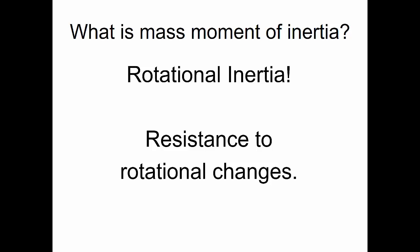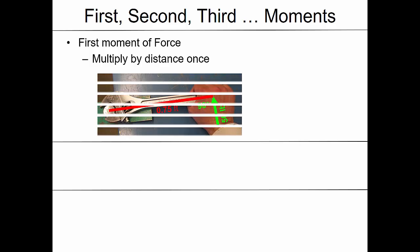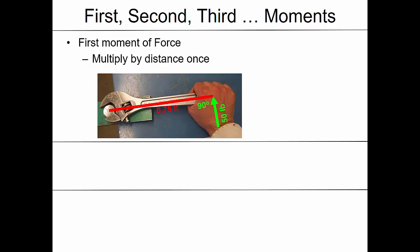To understand mass moments of inertia, we need to talk more about what a moment is — specifically, what a first, second, and third moment is. The first moment of a force we learned about in statics. A moment is found by multiplying the force by a distance once. So if I've got a wrench and I'm pushing on it at 90 degrees with 50 pounds, with a moment arm of 0.75 feet, then the first moment equals 50 times 0.75, which gives 37.5 pound-feet.